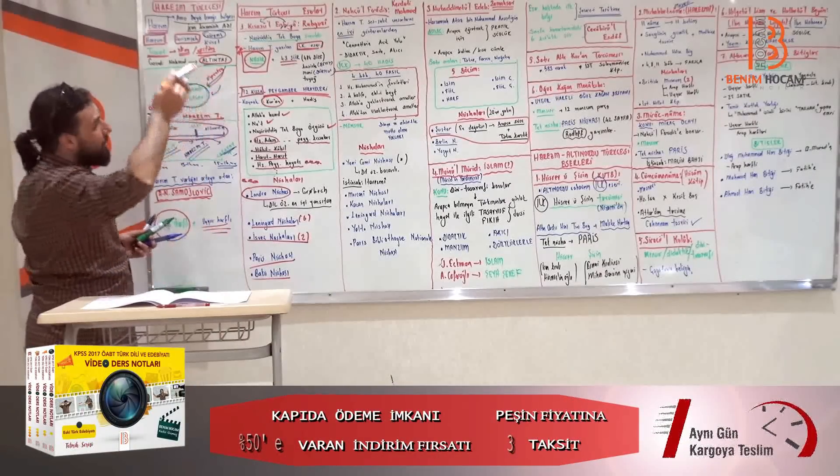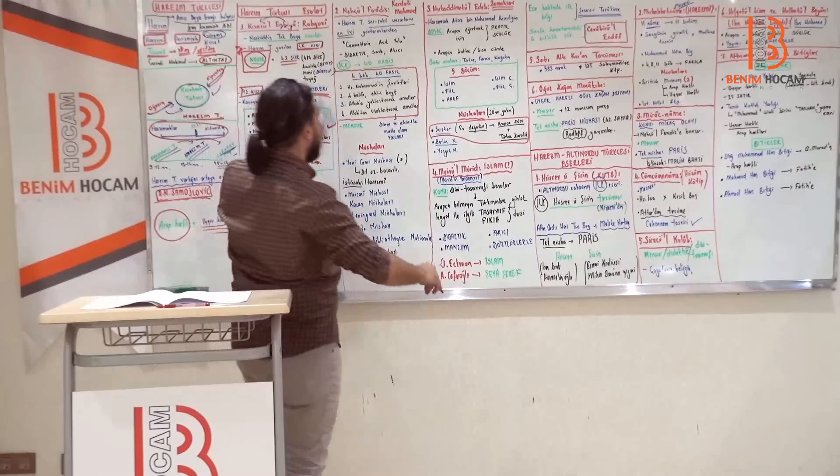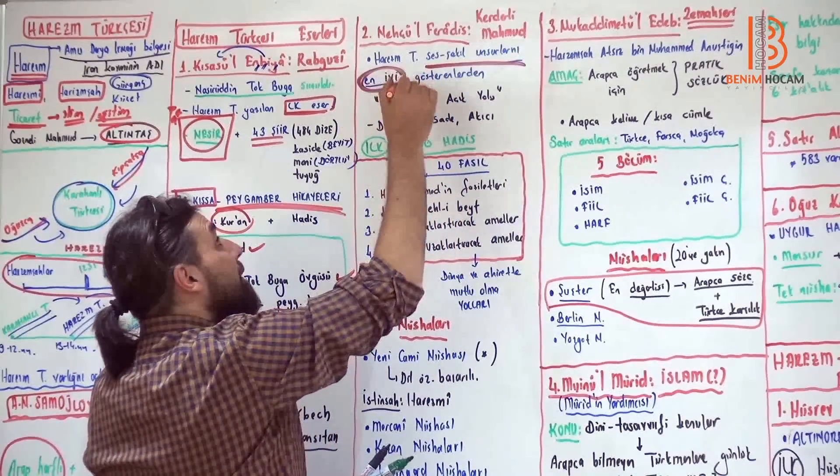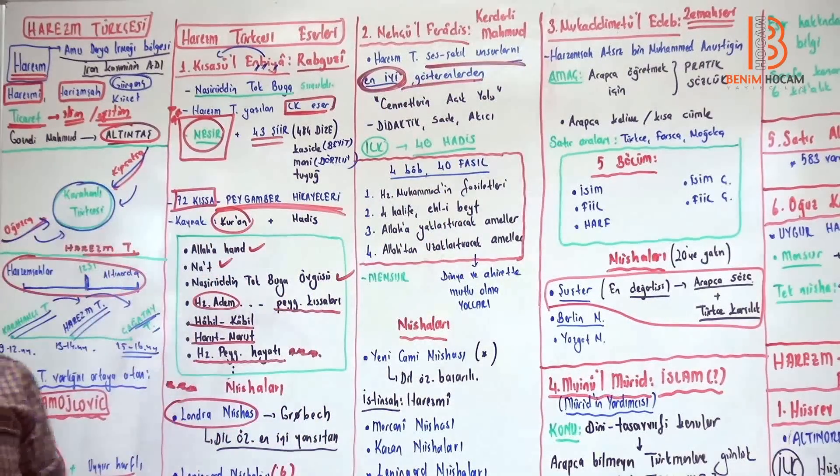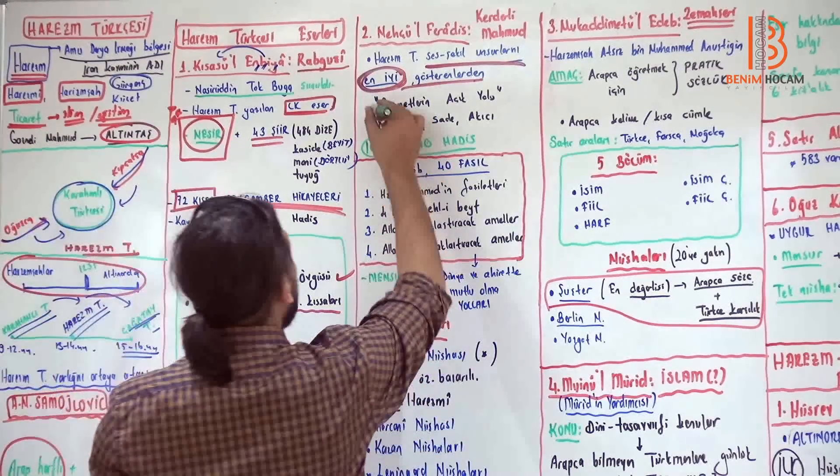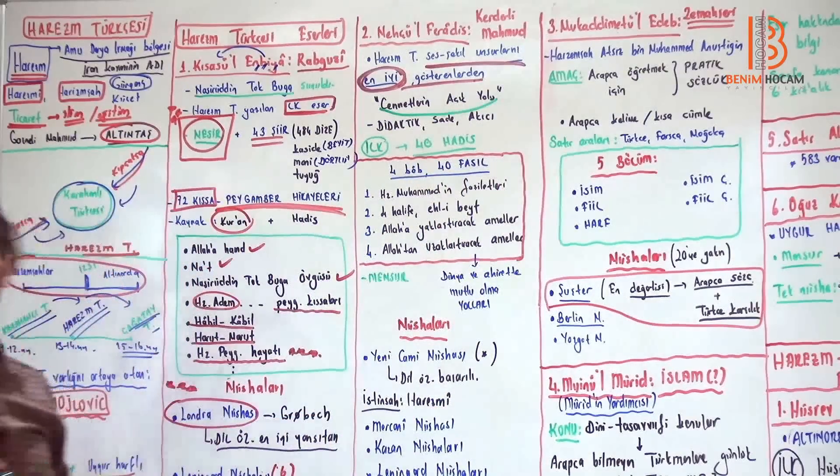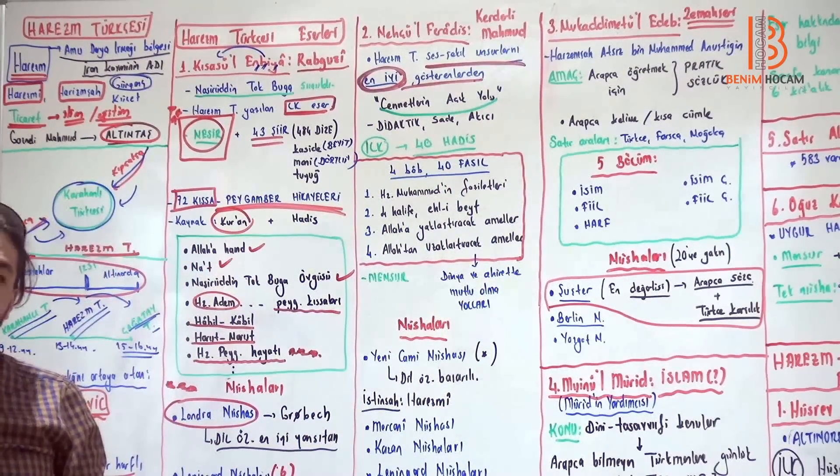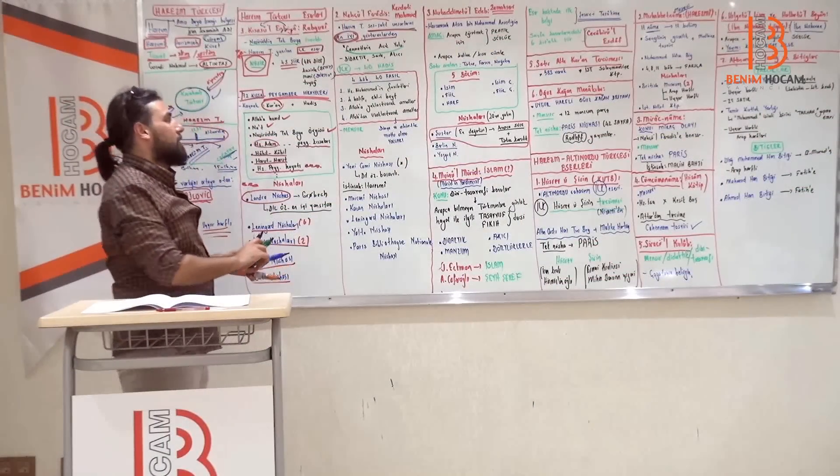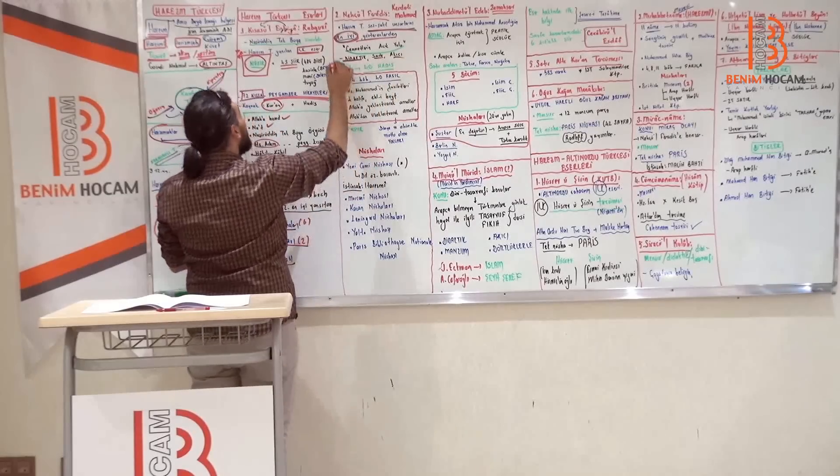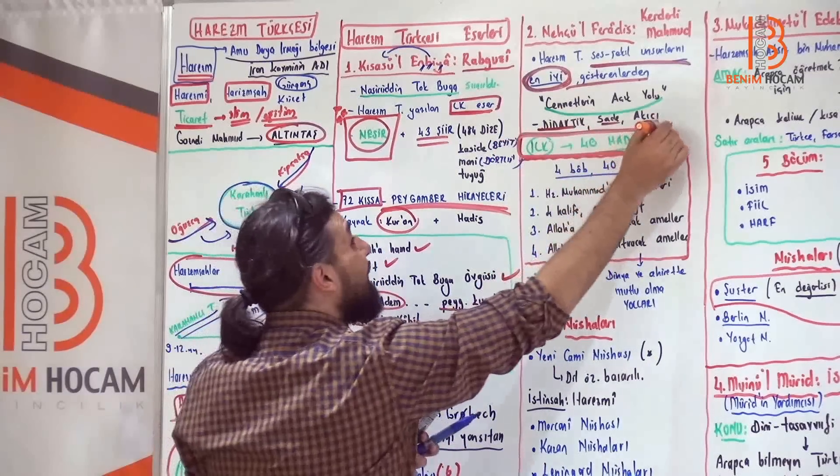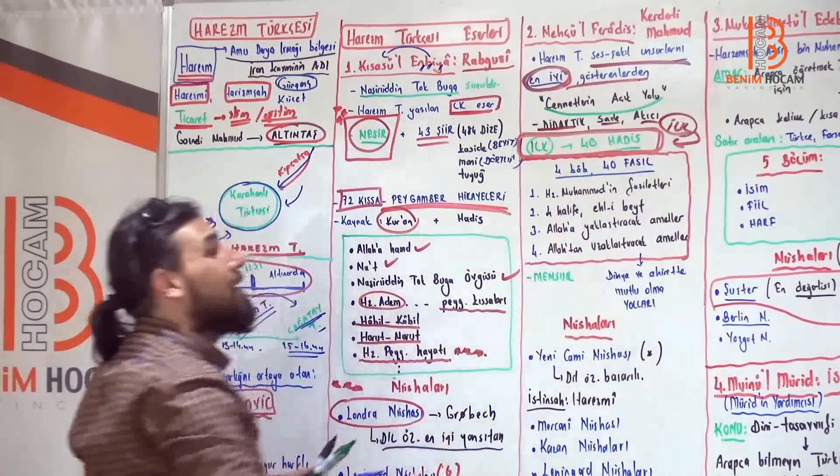Neçül Feradis, Kerderli Mahmud'un yazdı. Arkadaşlar dizgatası, Kerderli Mahmud olacak. Harezm Türkçesinin ses ve şekil unsurlarını en iyi ihtiva eden eserlerden biridir. Yani bir araştırmaç Harezm Türkçesini araştıracaksa Neçül Feradis ilk başvuru kaynağı olsun. Cennetlerin açık yolundan bahseder. İnsanların cennete nasıl yol alacaklarını. Yani bir nevi dünyada ve ahirette mutluluk. Dünyada şunları yapacaksın, orada yer alacaksın. Didaktiktir, öğreticidir, sade bakıcıdır. Ve değerli yan nedir biliyor musunuz? Türk Edebiyatı'nda ilk 40 hadis örneğidir.